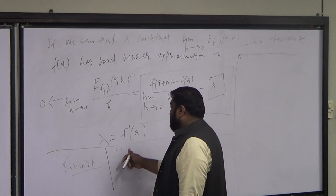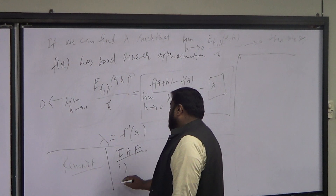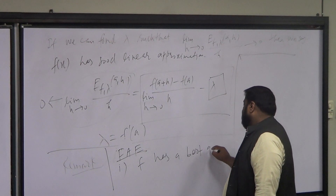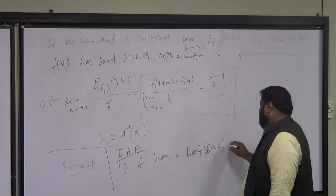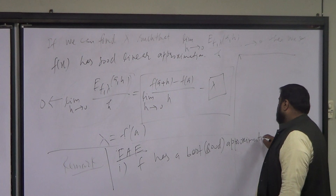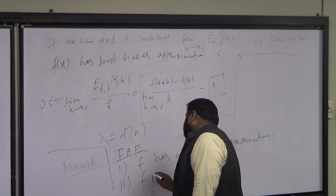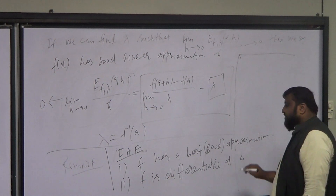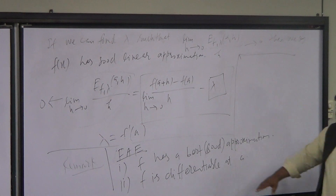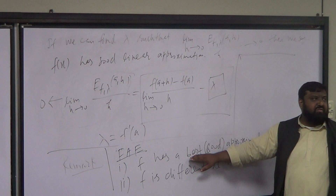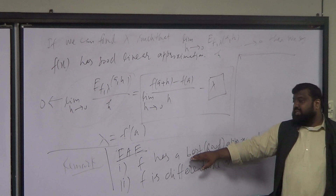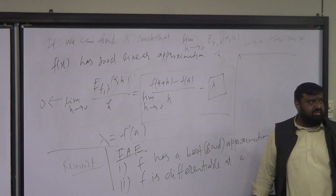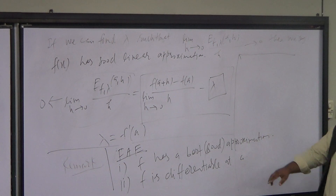So I'll write this as a remark: the following are equivalent. First, f has the best linear approximation at a (the book calls it a good approximation). Second, f is differentiable at a. These two things are equivalent. If f is differentiable at a, you can find the best approximation to the function at a. And if f has a best approximation at a, this would only happen if f is differentiable at a.